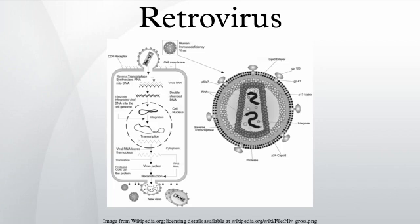Retroviridae is a family of enveloped viruses that replicate in a host cell through the process of reverse transcription. A retrovirus is a single-stranded RNA virus that stores its nucleic acid in the form of an mRNA genome and targets a host cell as an obligate parasite.